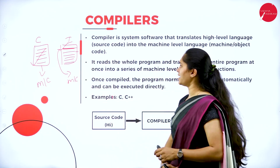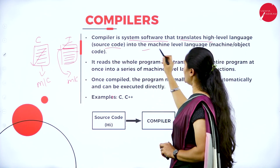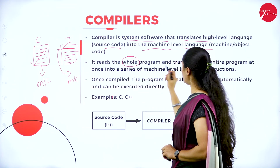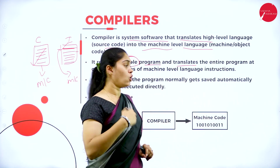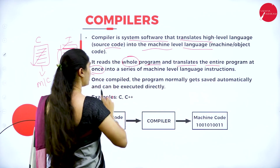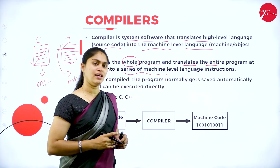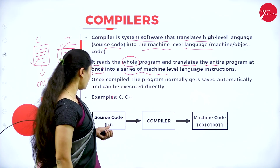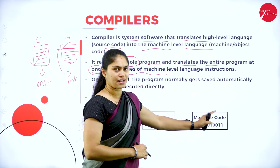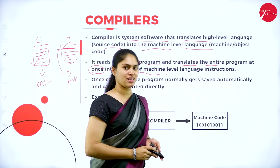A compiler is a system software that translates high level language — source code — into machine level language. It reads the whole program and translates the entire program at once into a series of machine level instructions. The source code is translated into machine code using the compiler. C and C++ are examples of compiler-based languages.